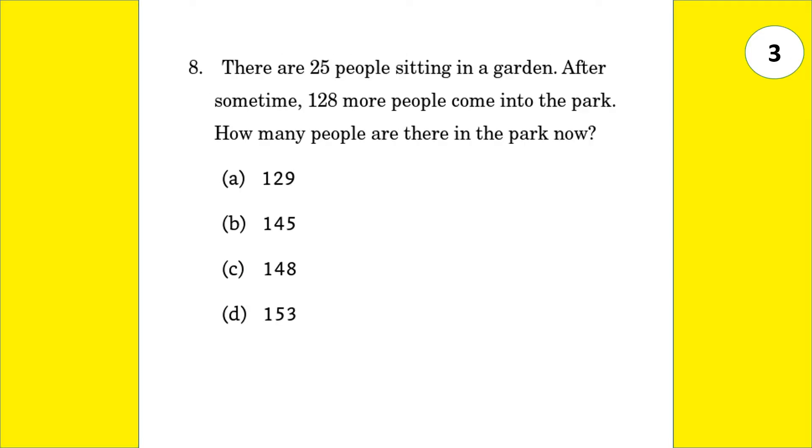There are 25 people sitting in a garden. After some time, 128 more people come into the park. How many people are there in the park now? Add 128 plus 25, it comes out to be 153.